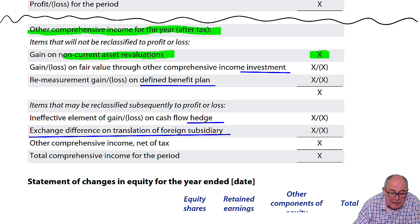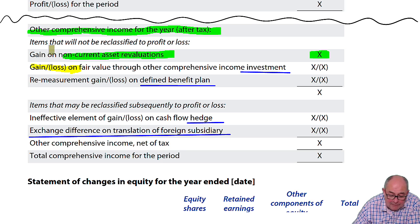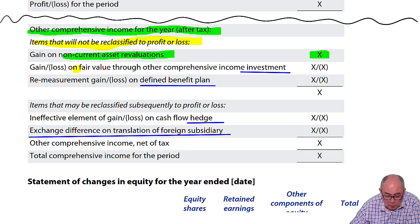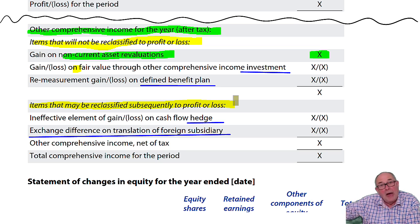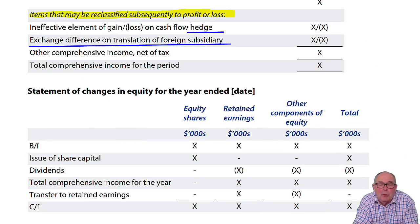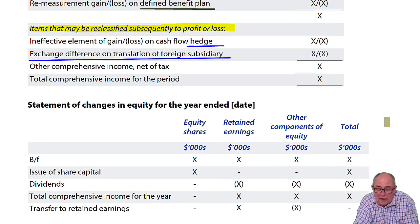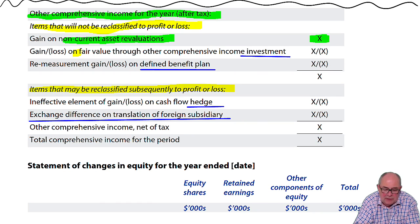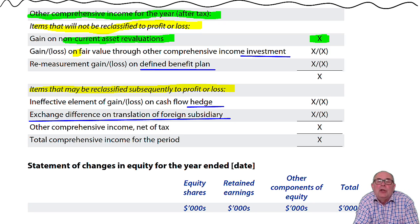You'll also see, as you look through the notes, that they make a distinction between two lines — one here and one further down. They talk about reclassifying. In some circumstances, gains reported in OCI are later reported in profit and loss, or reclassified. It'll all be explained in the notes. All I'm saying at the moment is don't worry about it, but when you get to it in the notes, you'll need to give it some thought.